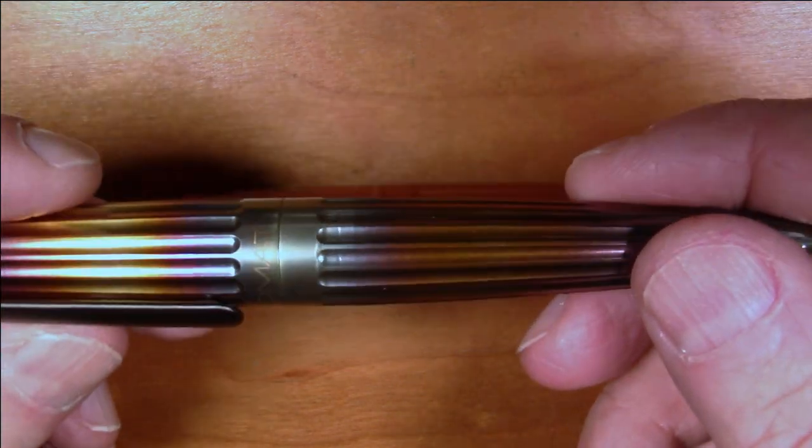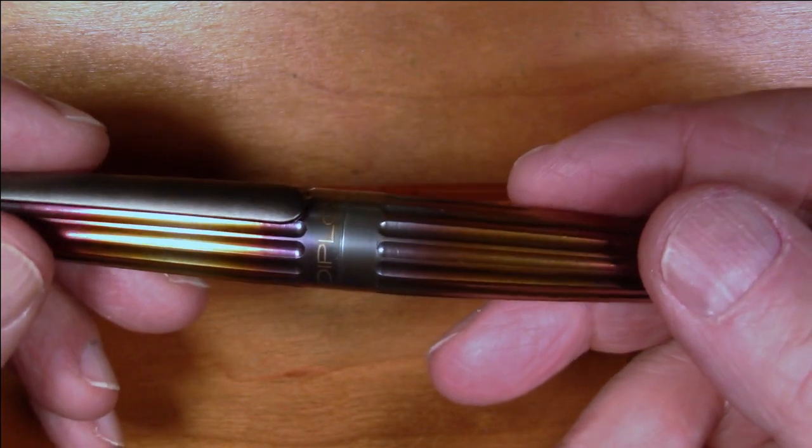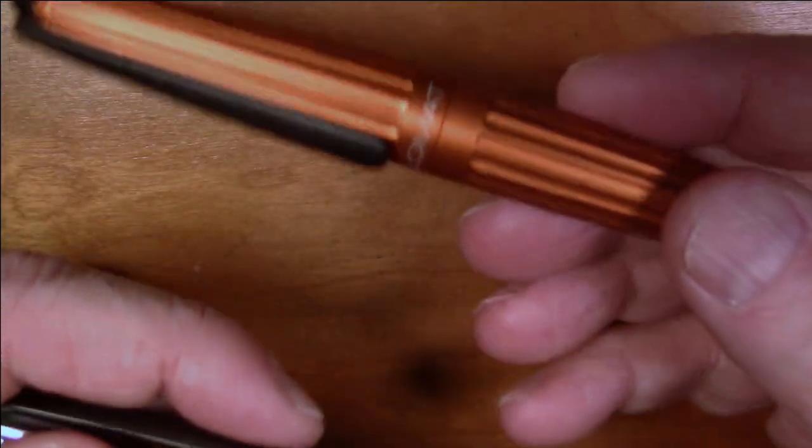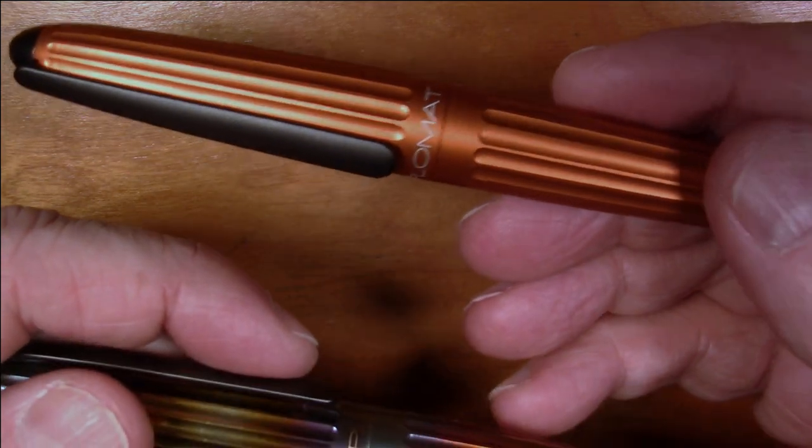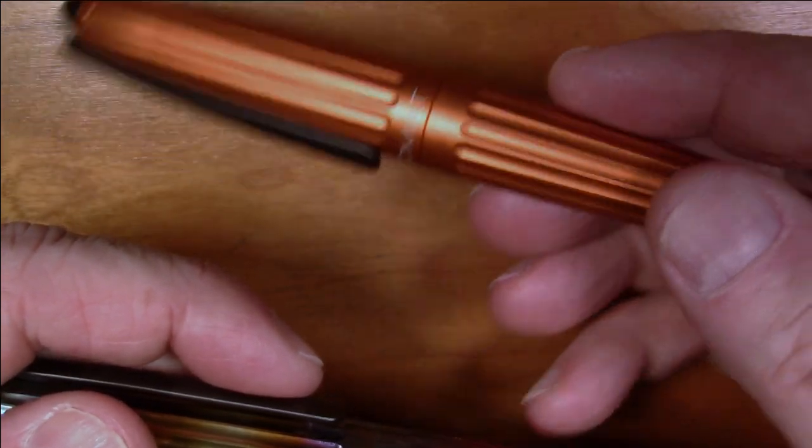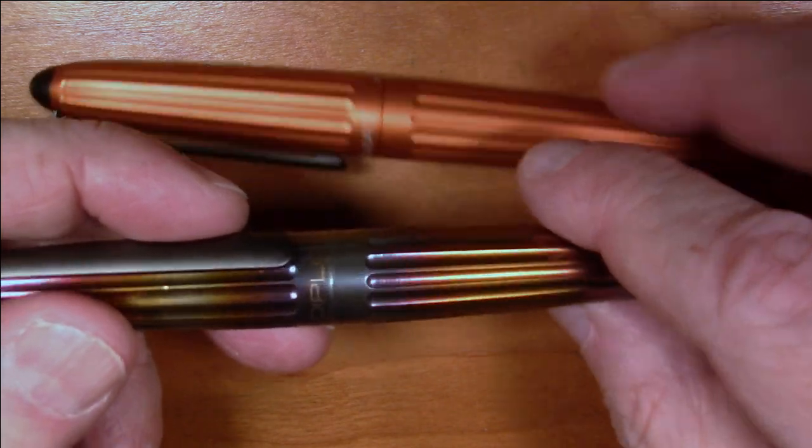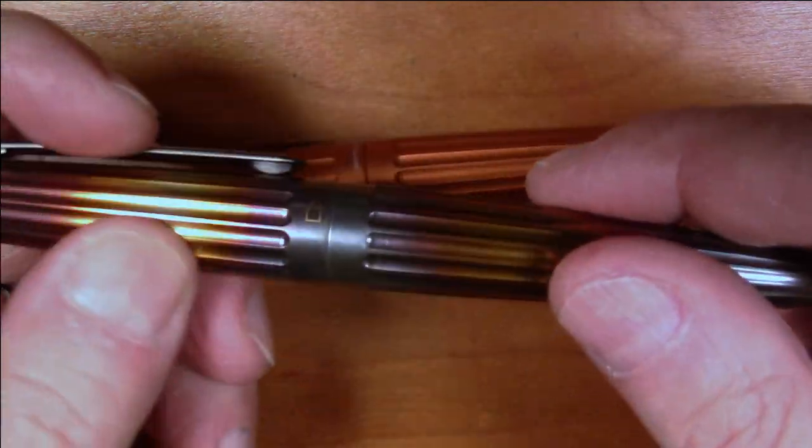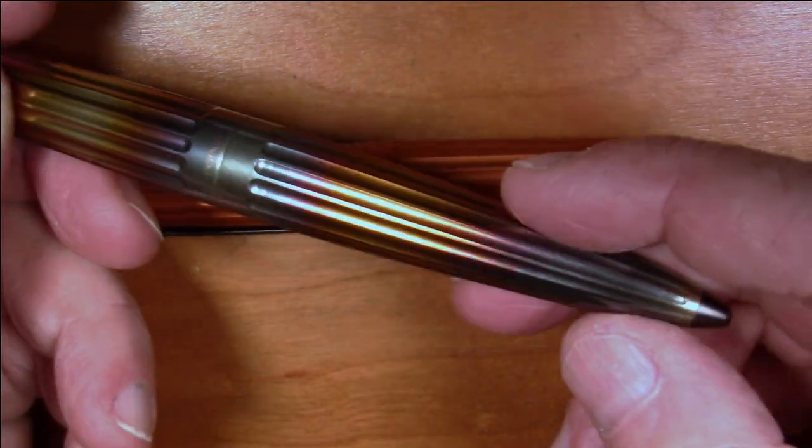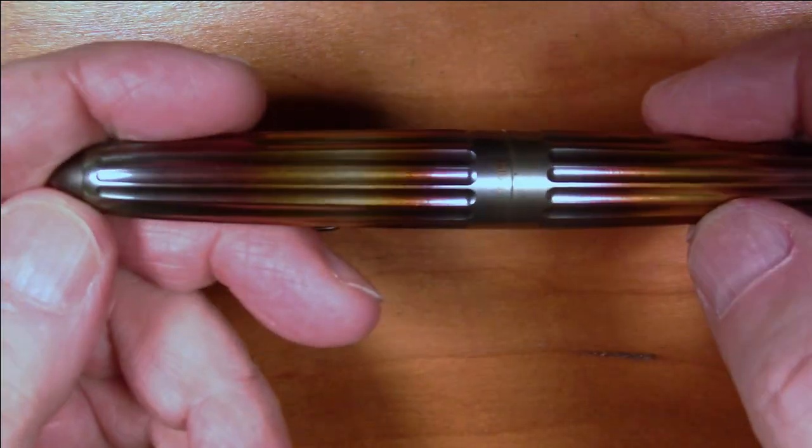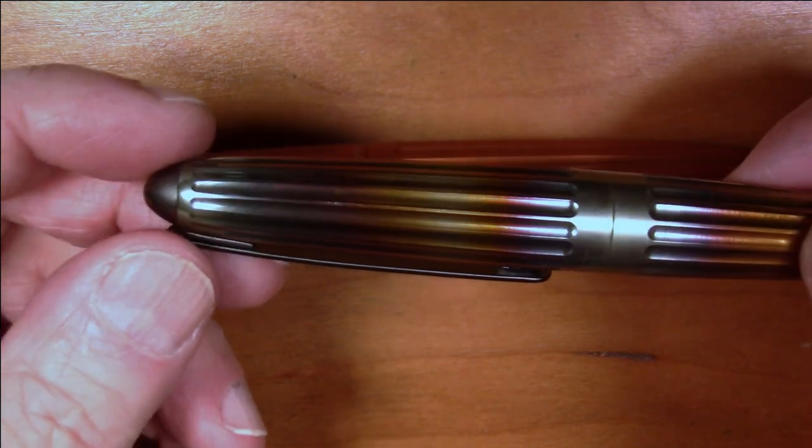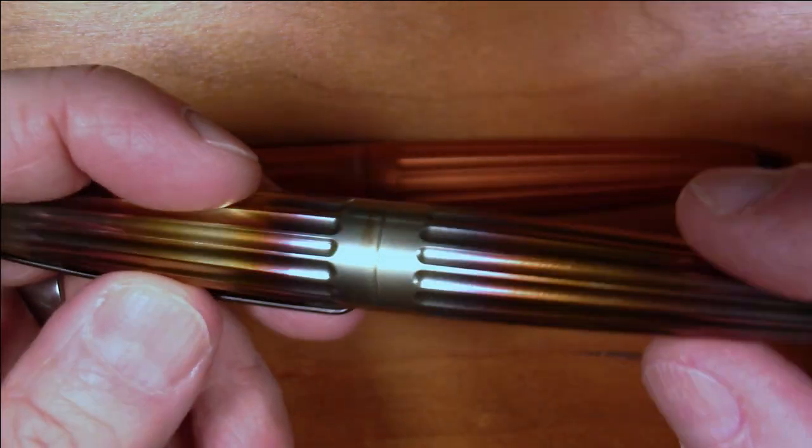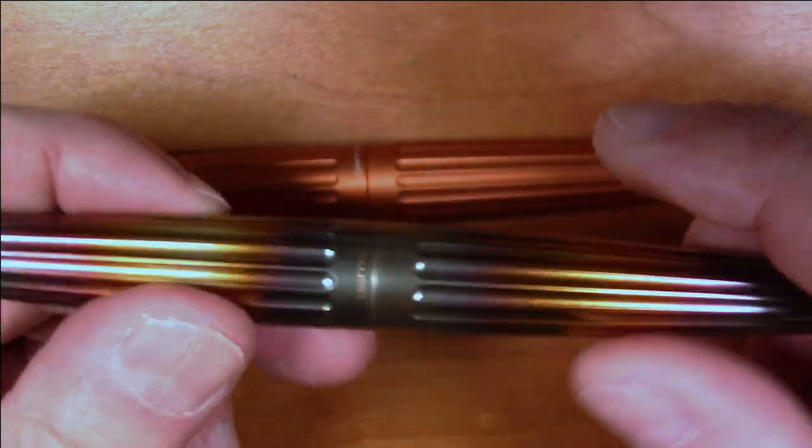It's a much heavier pen because this one is made of steel versus aluminum. The aluminum Diplomat Aero typically weighs 42 grams, this one is much heavier at 70 grams. You do get this really pretty and very unique torch flamed effect. As a consequence, no two of these are quite exactly the same because this is done by hand.